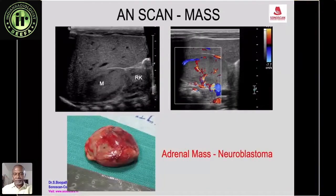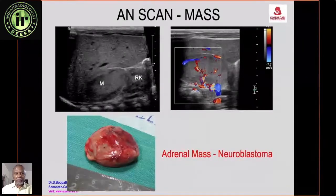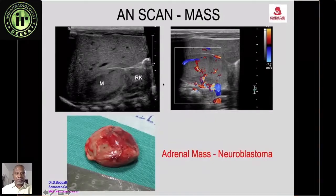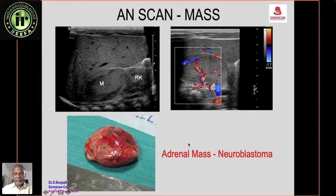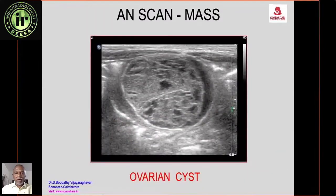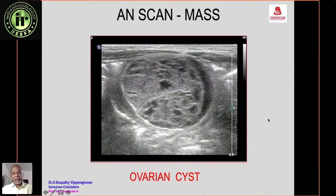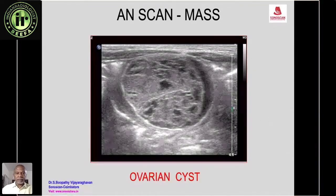This is a case of an antenatal scan reported as an abnormal mass. A mass is seen in the right adrenal area, and on color Doppler there is flow. It was removed and turned out to be a neuroblastoma. More commonly, an ovarian cyst is found on antenatal scan - here it is complicated with a lot of debris inside.